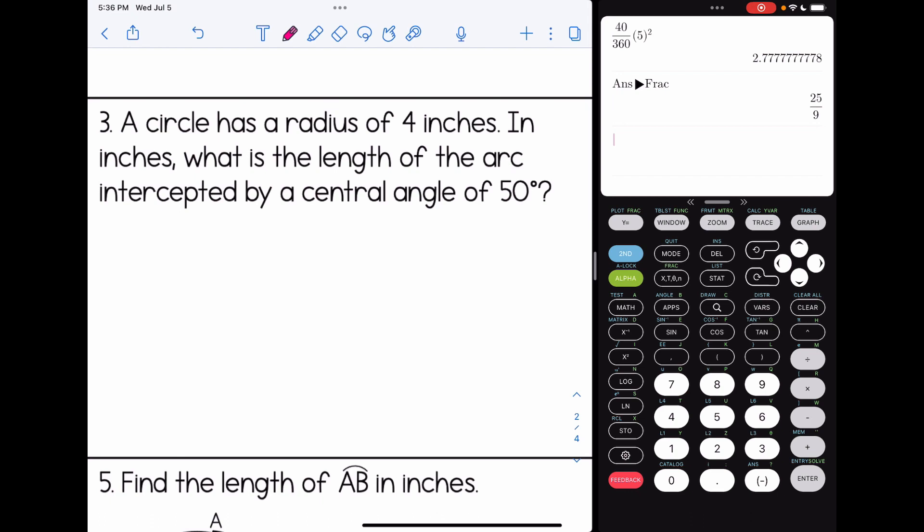All right, let's look at some more. Number three, a circle has a radius of 4 inches. In inches, what is the length of the arc? Notice your keywords telling you what formula to use. Intercepted by a central angle of 50 degrees. So arc length equals 50 over 360 2πr. If for circumference you were doing pi times diameter, you'll get the same answer, by the way. So I have 50 over 360 times 2 times 4, and this looks like a familiar answer from the last page. We get 10 over 9 again for this one, put pi in, and our unit is going to be inches.